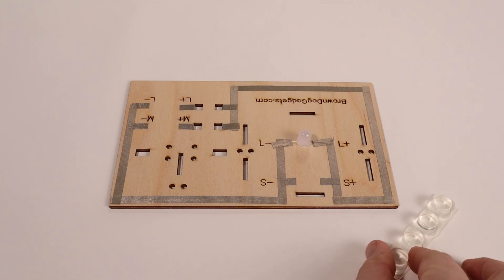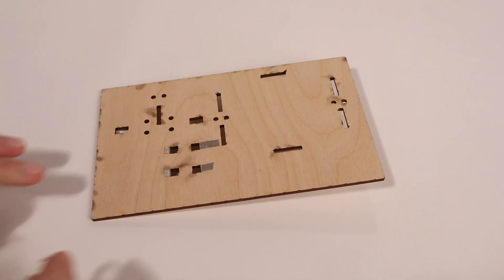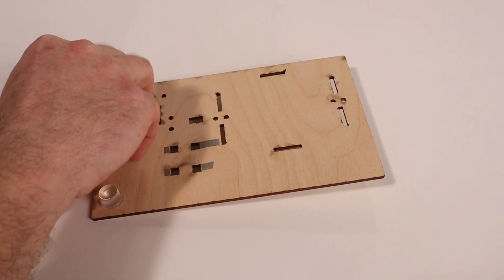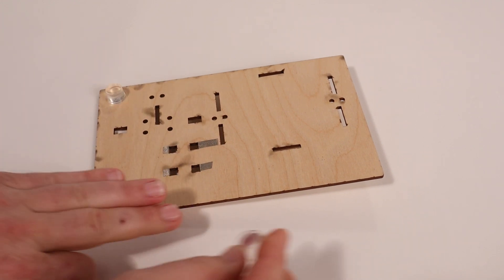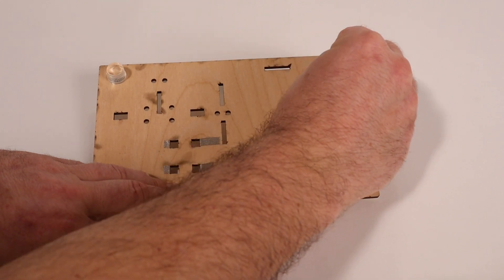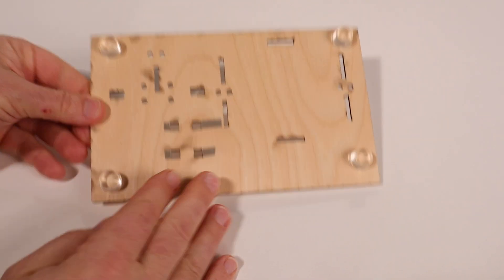Now we'll add feet to the base. Flip the base upside down, peel the feet off the strip they're attached to, and place one foot in each corner of the base. Flip it back over when we're done.